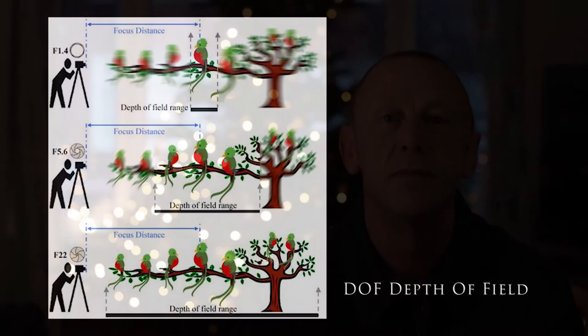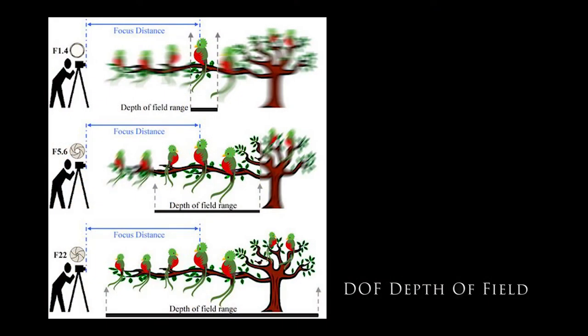So, how do we create this blurry background? Well, there's a little bit of science involved, and the first part of that science is understanding depth of field. Understanding depth of field is one of the first big hurdles in photography and videography.